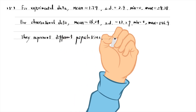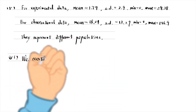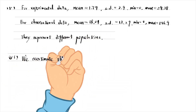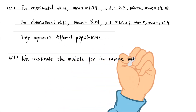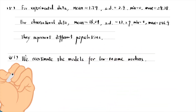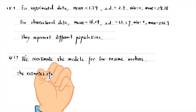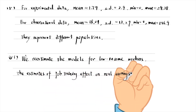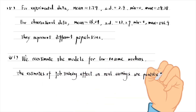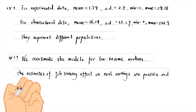In part 6, we re-estimate the models for low-income workers. The estimates of the job training effect on real earnings are positive and significant using both data sets.